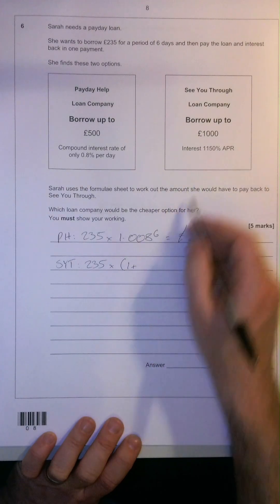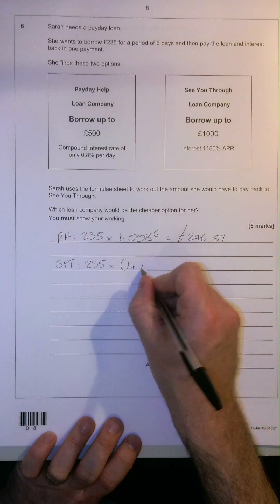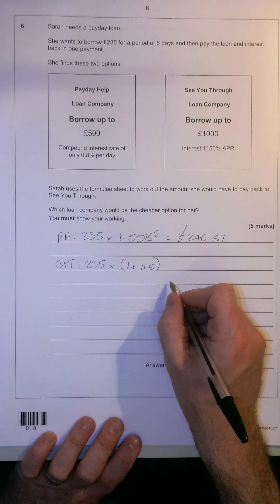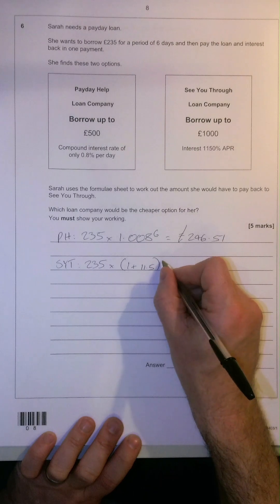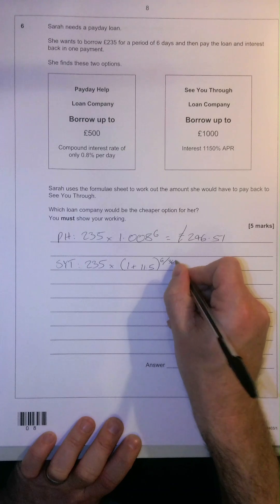1 plus, well, in this case, 1150%, so 11.5. But it's only for 6 days and we've been given that as the yearly interest rate. So we times it to the power of 6 over 365.